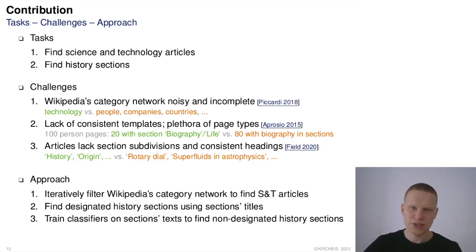To solve these issues, we first iteratively filtered science and technology articles using Wikipedia's category network. We then selected designated history sections using section titles and then used these sections to train classifiers in order to be able to find non-designated history sections.